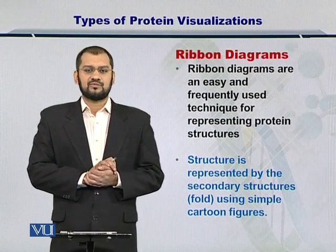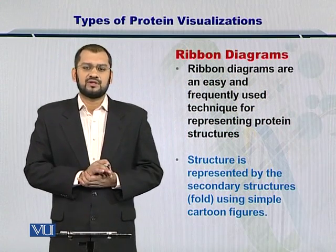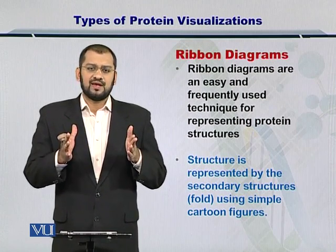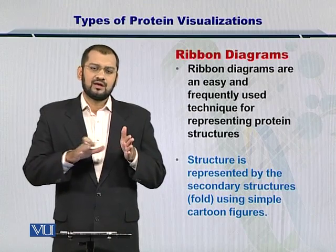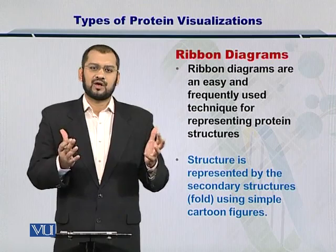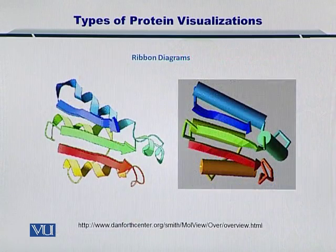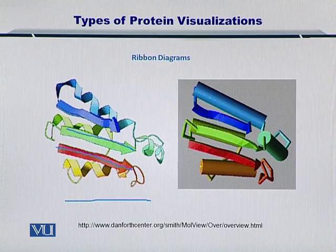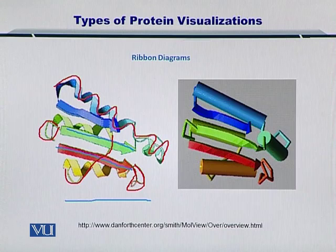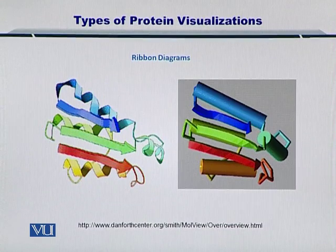Next, you have the ribbon diagram. Ribbon diagrams are a simplified representation and are very popular amongst bioinformaticians. The ribbons, as is obvious from the name, represent the secondary structures present in the protein structure. Each secondary structure is represented by a ribbon, and these ribbons come together to form the overall protein structure. In this example, you can see some beta sheets as well as some alpha helices. These are the secondary structures, and the ribbons come together with the help of loops. The ribbon diagram is one of the most popular techniques employed.